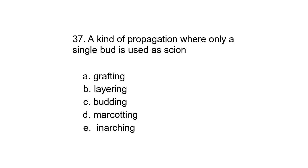Question 37. A kind of propagation where only a single bud is used as a scion. A. Grafting, B. Layering, C. Budding, D. Marcotting, or E. Inarching. The correct answer is Budding.